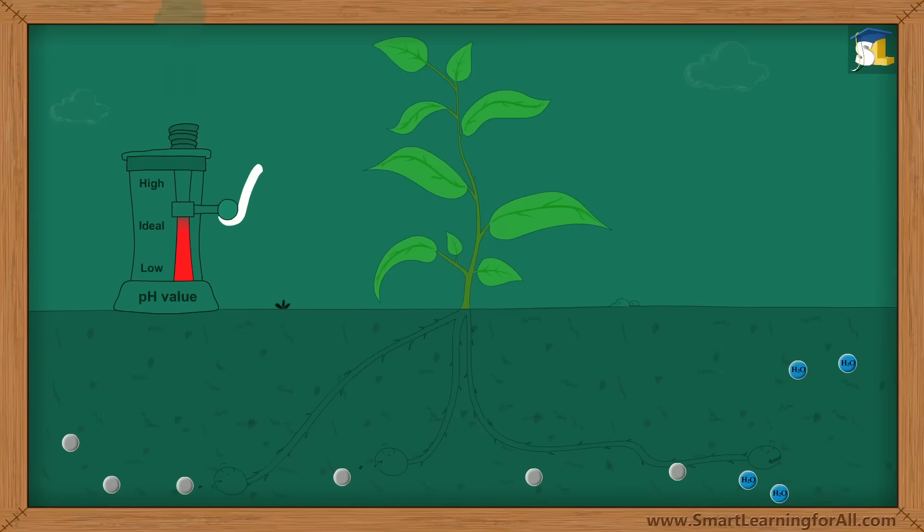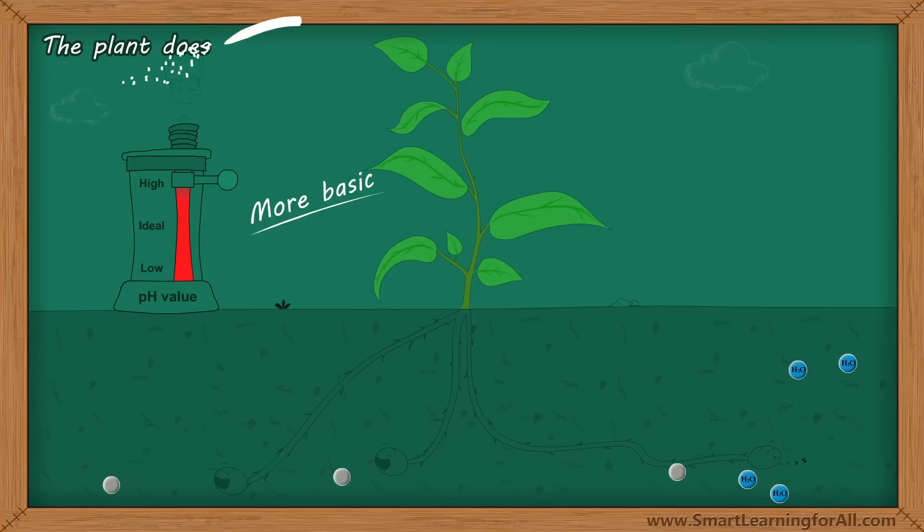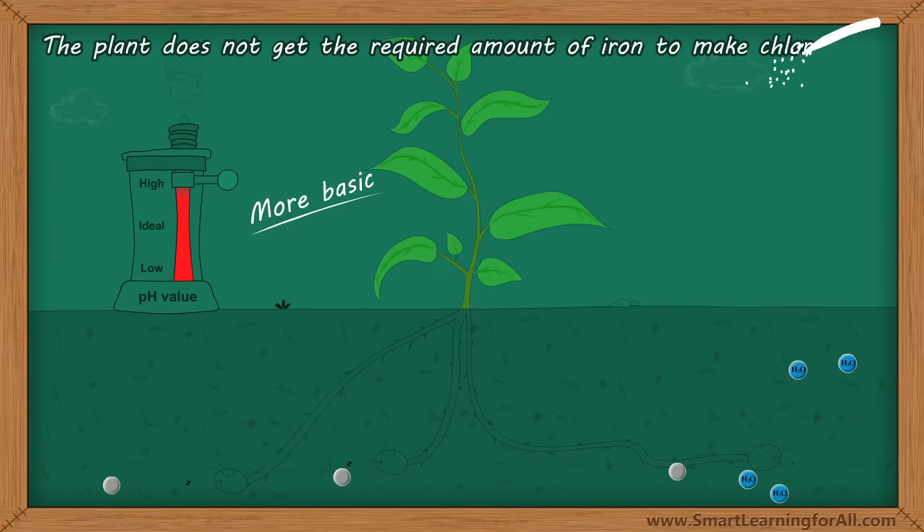However, when the pH of soil increases, that is, when it becomes more basic, the availability of iron decreases. As a result, the plant does not get the required amount of iron to make chlorophyll and hence it turns yellow.